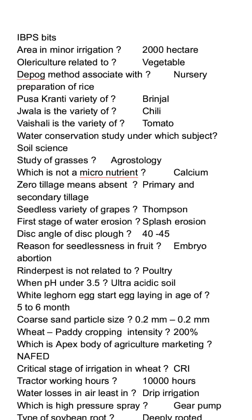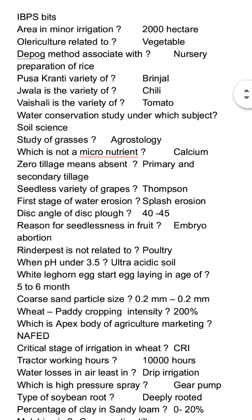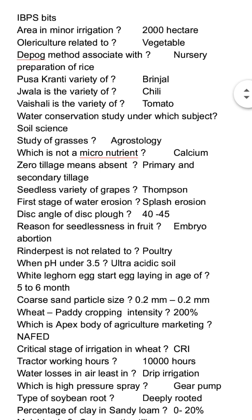Fuzakranthi is a variety of brinjal. Jwala is a variety of chilli. Naishal is a variety of tomato. Water conservation is studied under soil science, according to the given options.